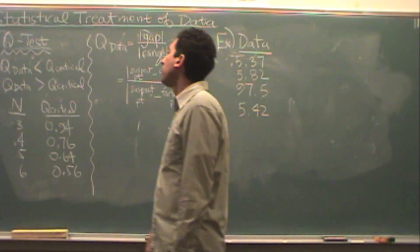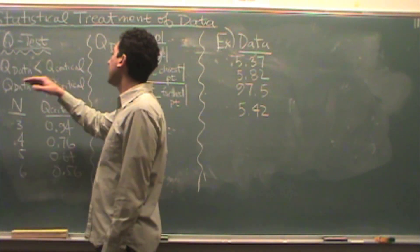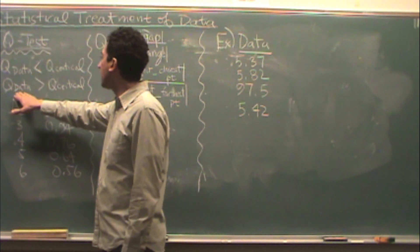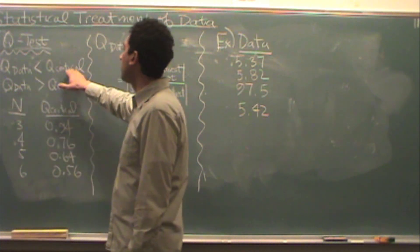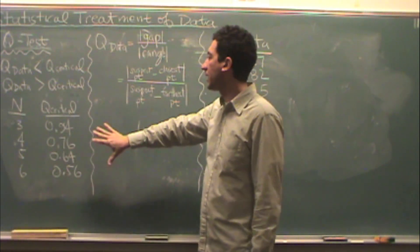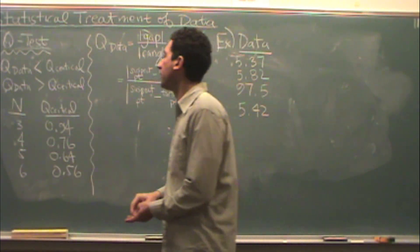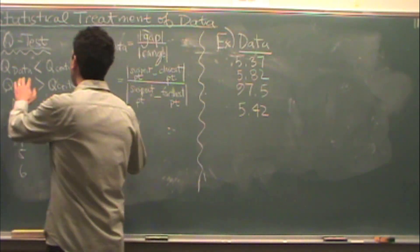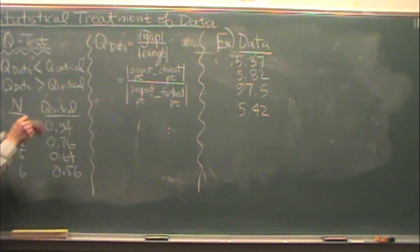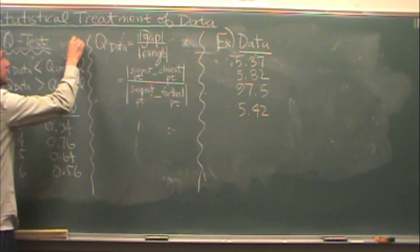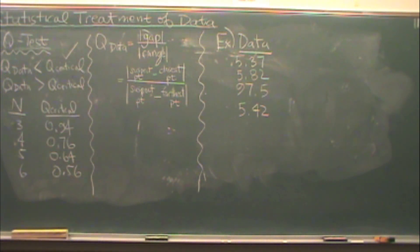So let's take a look at it. What you're going to do is look at the Q of your data versus the critical or tabulated value of Q and compare them. If you find that Q data is smaller than Q critical, you're going to keep that data point. If Q data is greater than Q critical, you're going to discard that data point. It is no good.